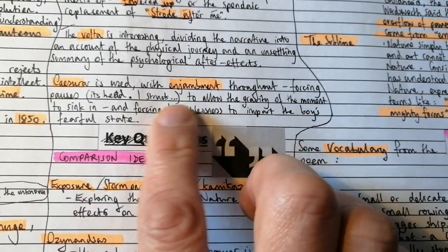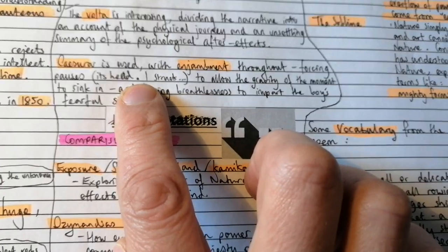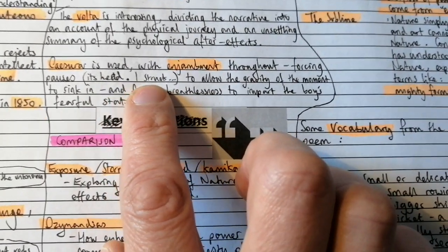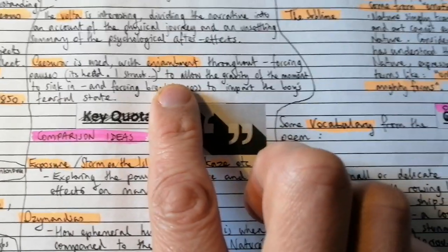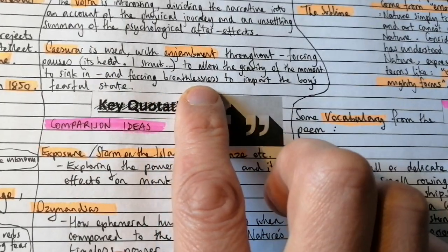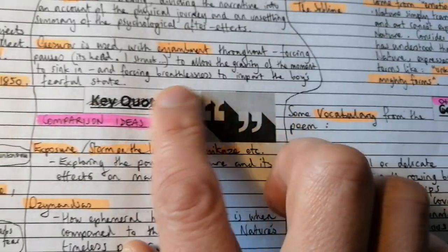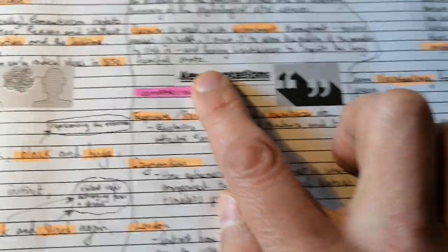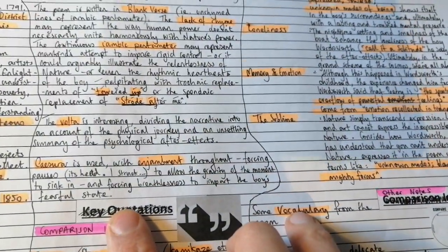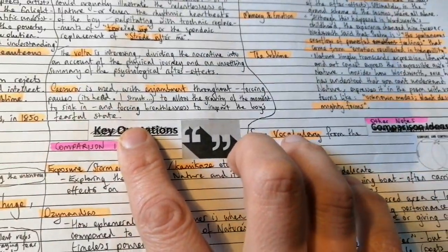caesura is used with enjambment throughout, forcing pauses. There's a significant where we hear that it upreared its head. I struck and struck. This allows the gravity of the moment to sink in and forcing also with the enjambment breathlessness to impart the boy's fearful state where we have some of the longer sentences that are just like endless, it seems, and without full stops or terminal punctuation.